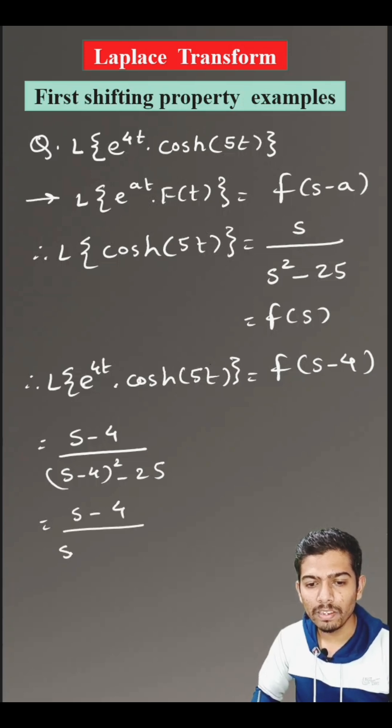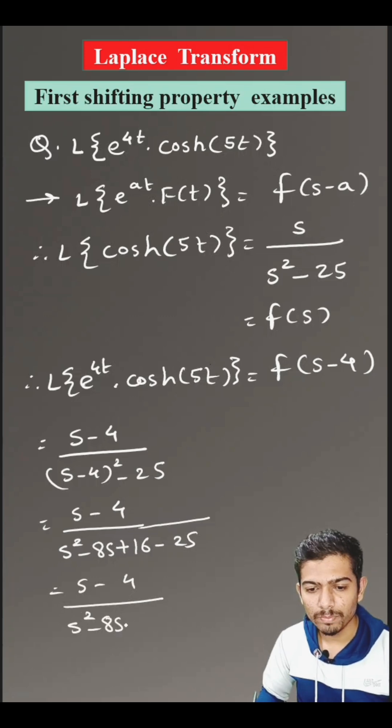s minus 4 divided by s square minus 8 s plus 16 minus 25. After that, s minus 4 divided by s square minus 8 s minus 9.